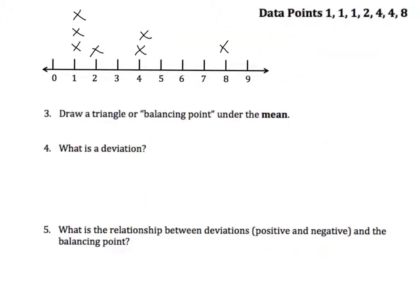Now that I have my dot plot, the next thing I need to do is draw a triangle or the balancing point under the mean. But that means I have to calculate the mean. So here are my data points, and in calculating the mean we add all of those points together.